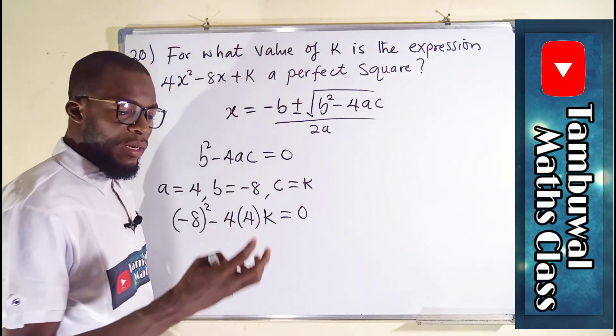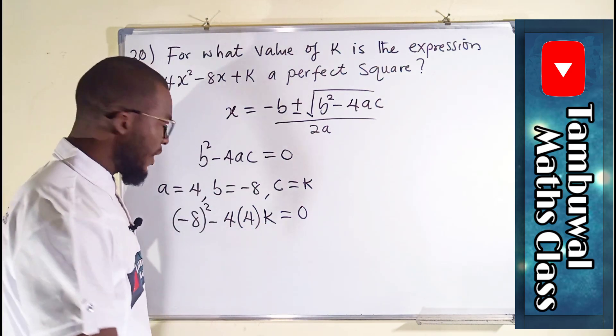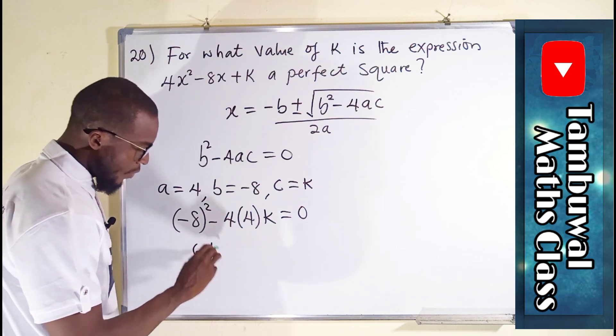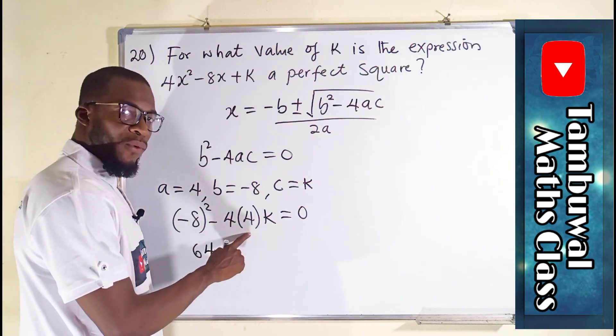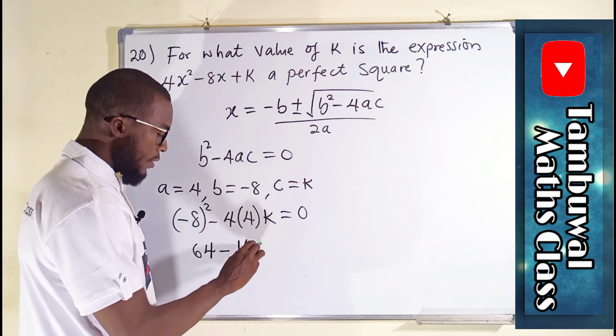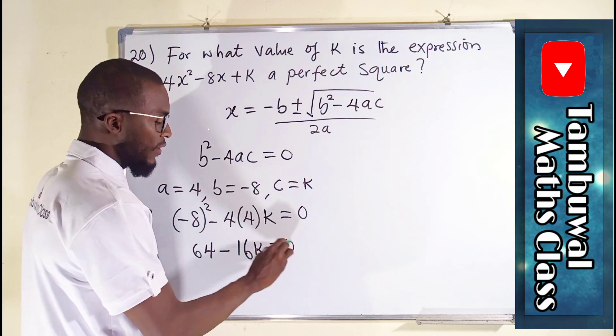Negative 8 squared, meaning negative 8 times negative 8, is positive 64. Minus 4 times 4 is 16 times k is 16k, equals 0.